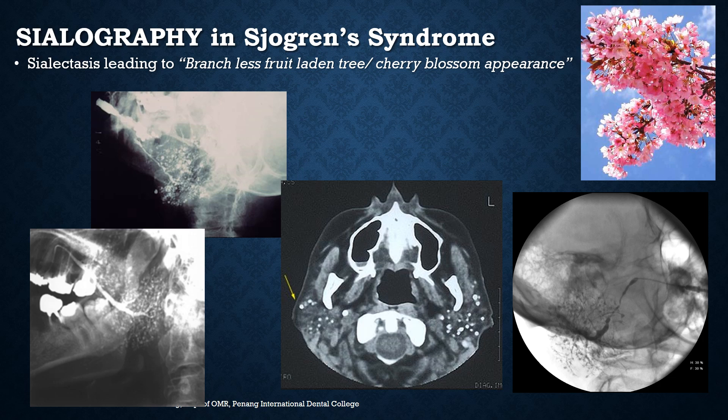Sialography in Sjögren's syndrome shows a very important radiographic feature. Sialectasis leads to a 'branchless fruit-laden tree appearance,' also called the 'cherry blossom appearance.' This occurs because the dye is retained in the inflamed salivary acini and is unable to flush out, giving this characteristic appearance. Various imaging methods including panoramic radiograph, lateral skull view, CT scan, and plain radiograph images can all be used after sialography.